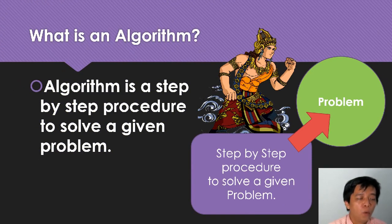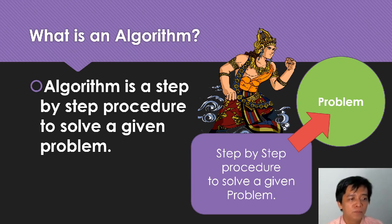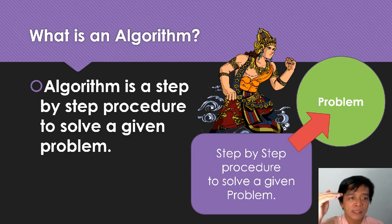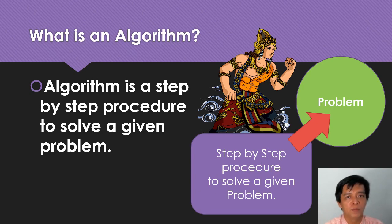What is an algorithm? Algorithm is a step-by-step procedure to solve a given problem. Remember: line one, line two, line three, line four. There's a step procedure to solve a given problem - there is a problem that you need to solve.